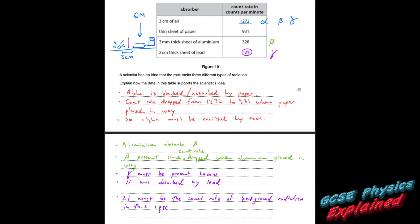The count rate dropped when lead was placed in the way, proving gamma radiation was present. The remaining count of 21 must be the background count rate — background radiation is around us all the time and nothing can stop it. That reasoning would easily earn six marks.